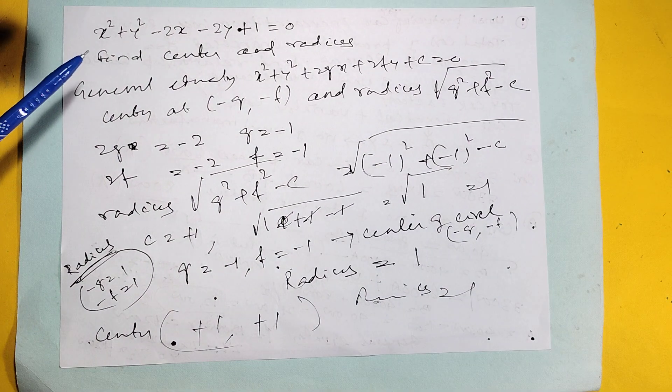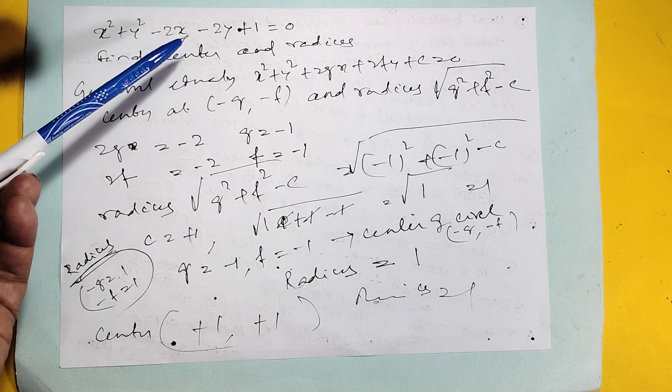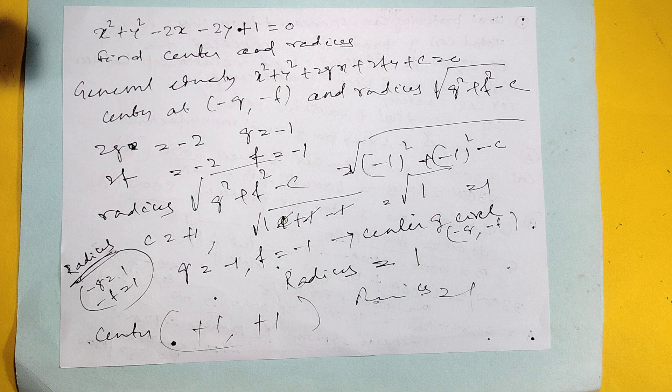Here one general equation is given: X squared plus Y squared minus 2X minus 2Y plus 1 equals 0. Find the center and the radius.